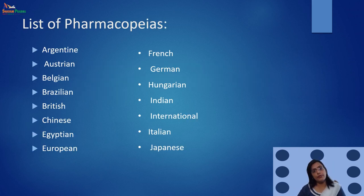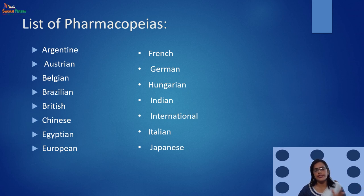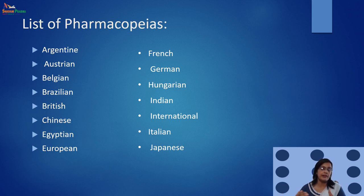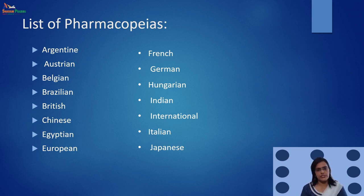The list of pharmacopoeias includes Indian pharmacopoeia, United States pharmacopoeia, British pharmacopoeia, Russian pharmacopoeia, and many more. There are many pharmacopoeias available worldwide for each country. Each country, depending on their research and complete background of their drugs and pharmaceuticals, updates their pharmacopoeia on a yearly basis. Different countries have their own pharmacopoeias and standards.